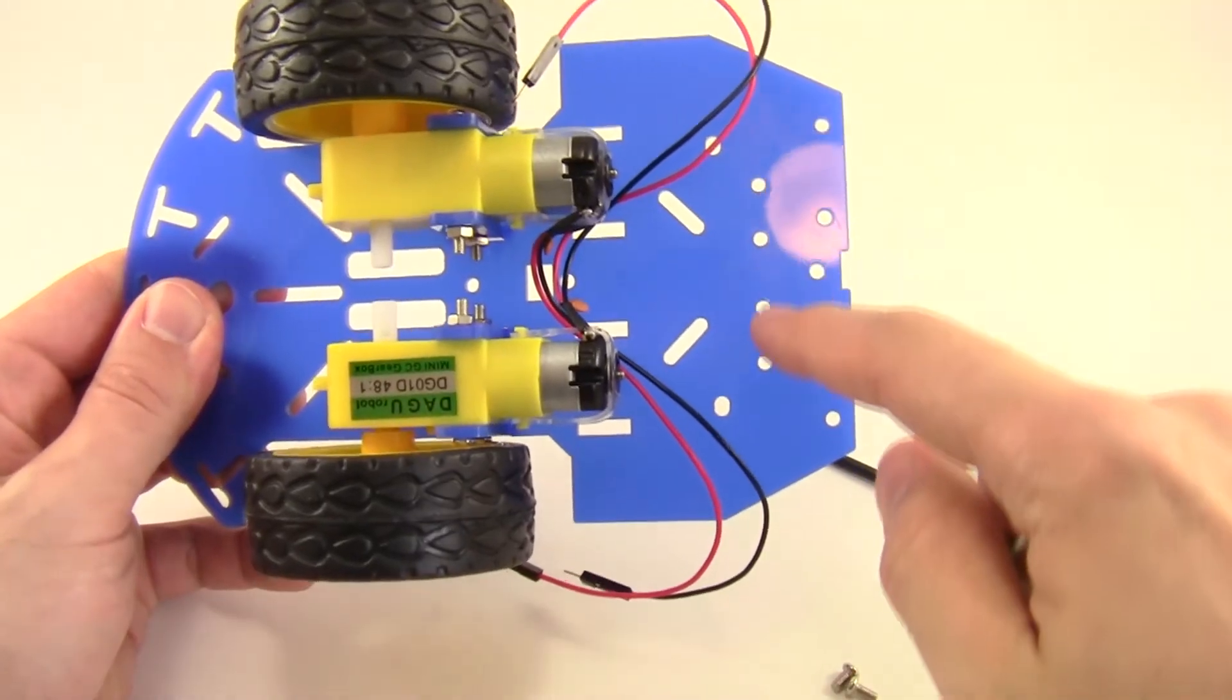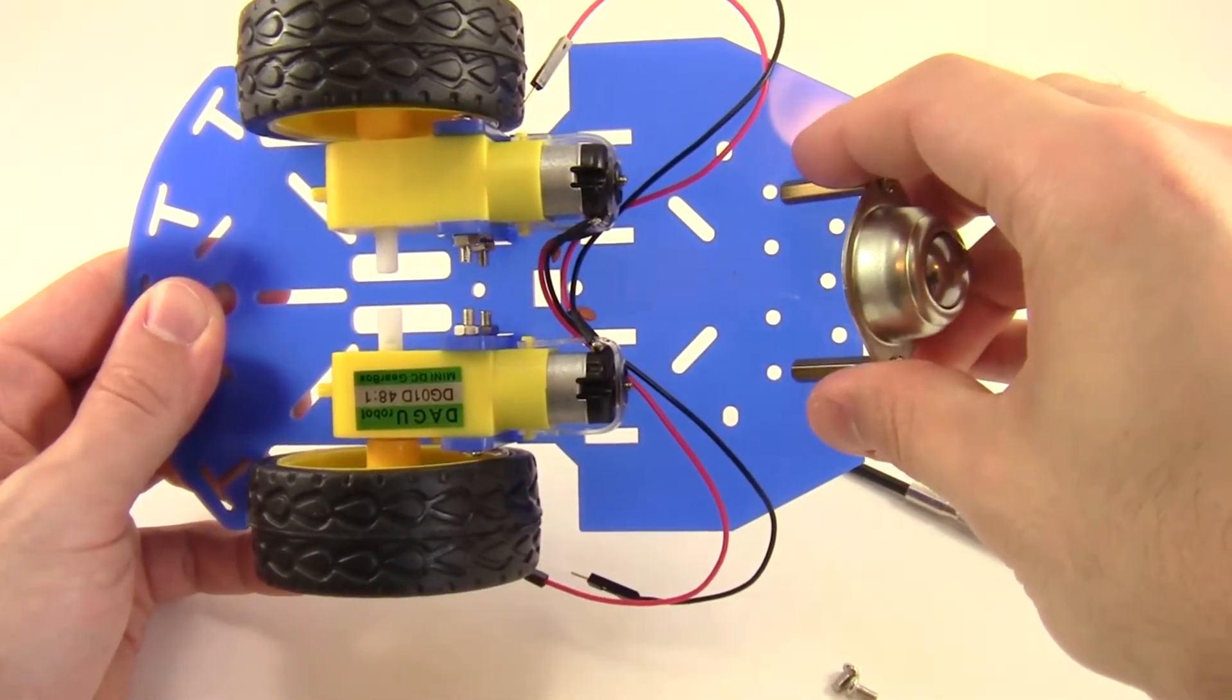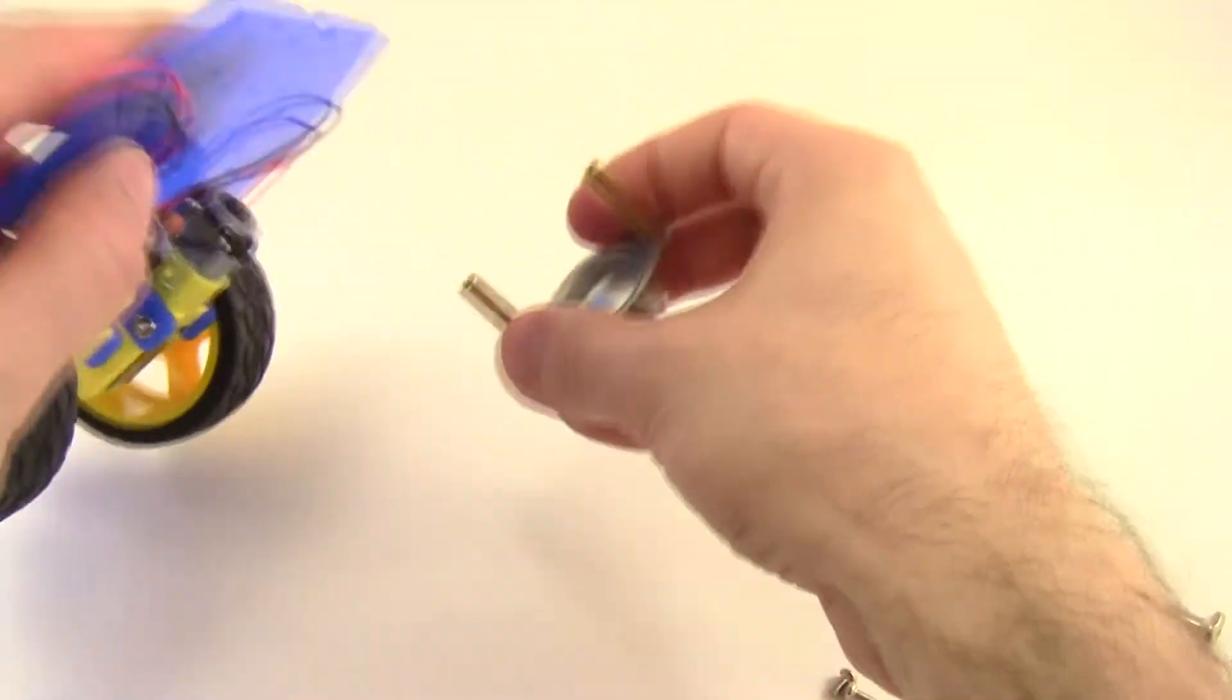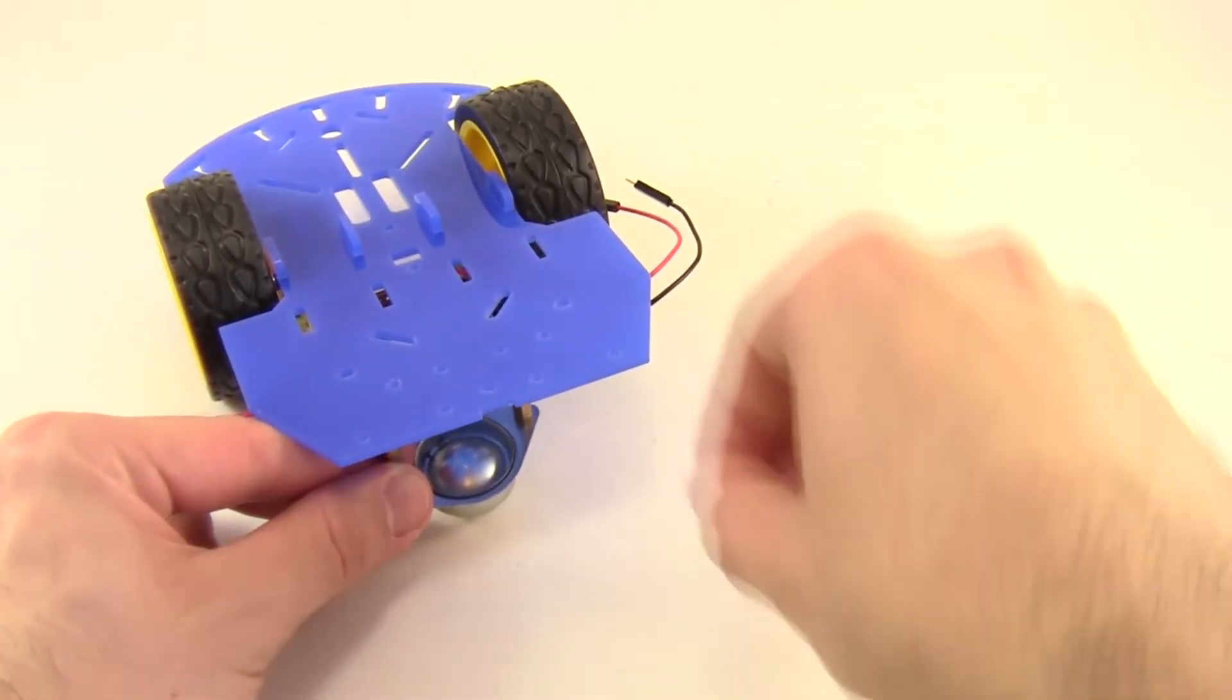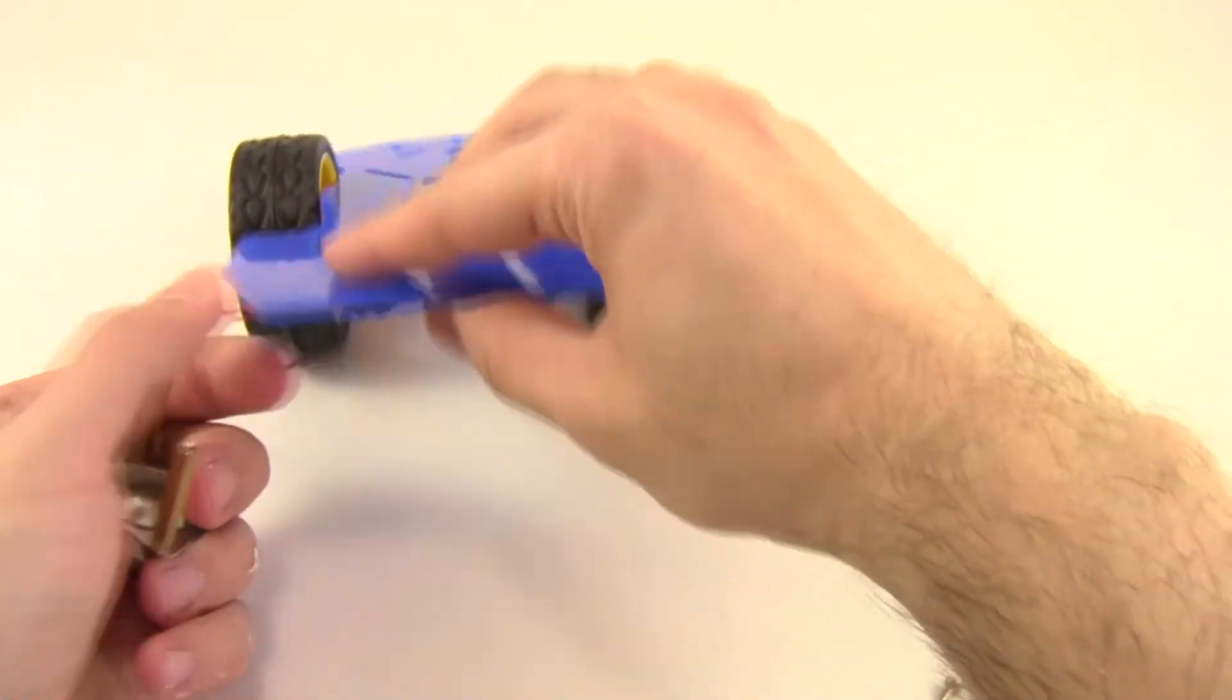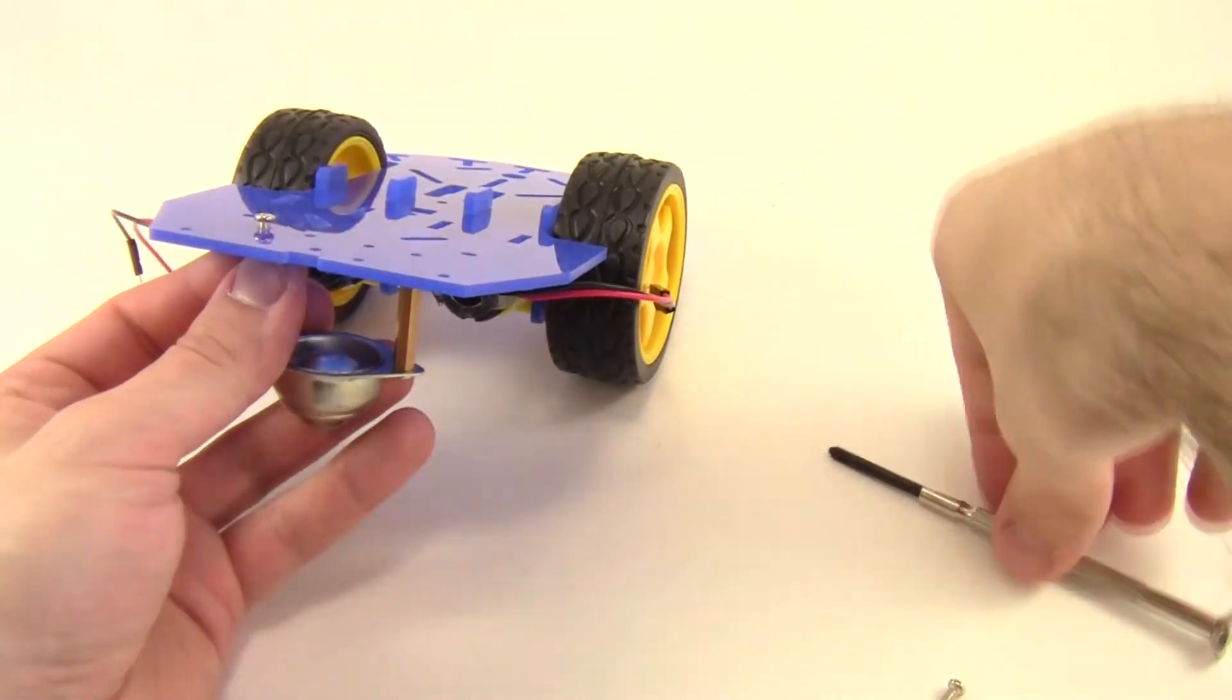Now you'll notice that there are a bunch of different circular holes on the back of the chassis, so you might be confused about which ones to use, but just line up the rear wheel and you'll see that the two standoffs line up perfectly with two of the holes. So just pop two more small screws into those holes from the top, and then use your screwdriver to screw them into the standoffs, and that will attach your rear wheel to the chassis.